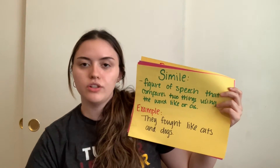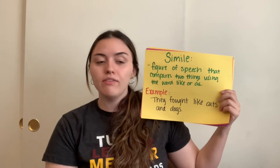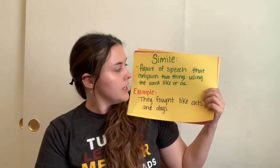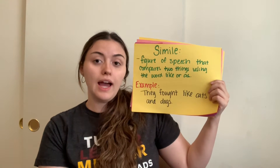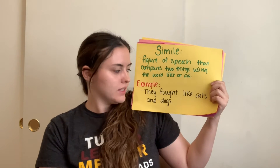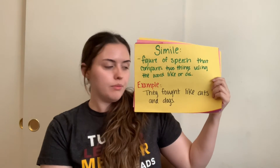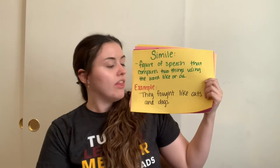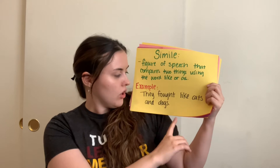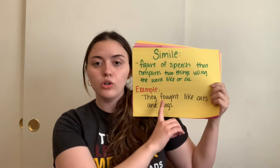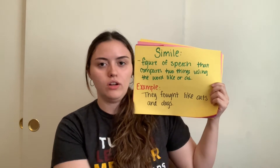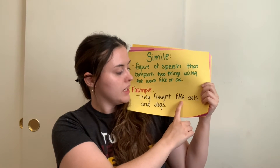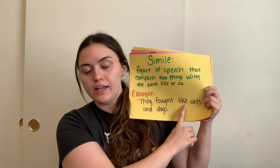Now we're going to cover the definitions of figurative language. Up first we have similes. A simile is a figure of speech that compares two things using the words like or as. A common simile I have for you today is they fought like cats and dogs — it is comparing whoever is fighting with the action of cats and dogs, and we know it's a simile because it uses the comparing word like.